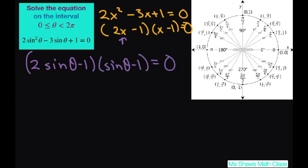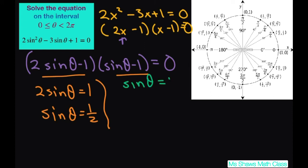Now use the zero product property. You get 2 sin θ - 1 = 0, so add 1 to both sides, then divide both sides by 2, so sin θ = 1/2. For the other factor, if you add 1 to both sides, you get sin θ = 1.